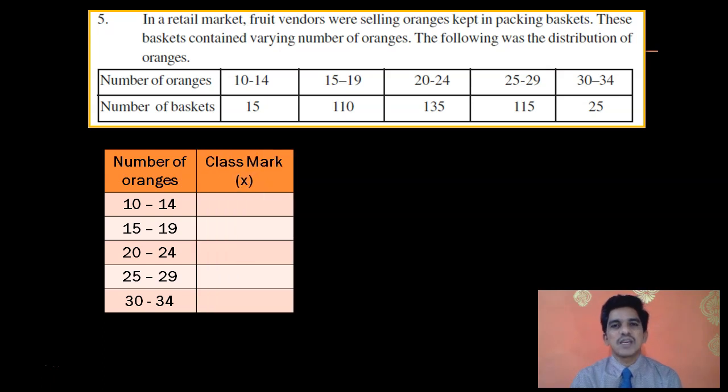Next, as we have already discussed, first we have to calculate the class marks. Class mark is the average of lower and upper limits of a class. So, for example, you take the case of 10 to 14. The 10 plus 14 gives 24. So, the class mark is 24 by 2, which is 12. Similarly, for second class 15 to 19, the total is 34, 34 divided by 2 is 17. Similarly, you can calculate the class marks for each class.